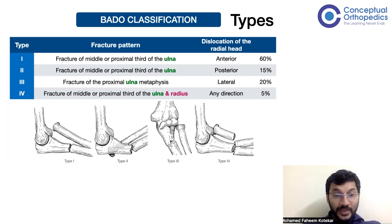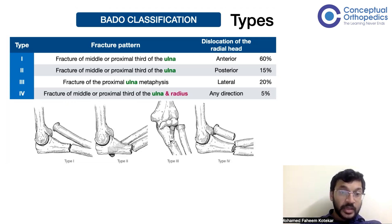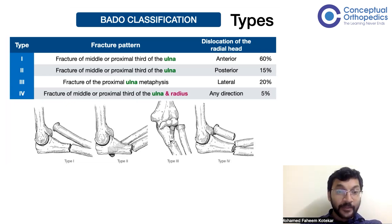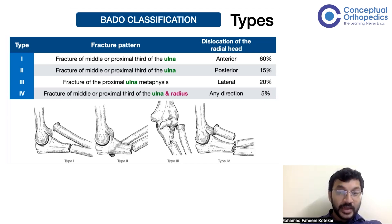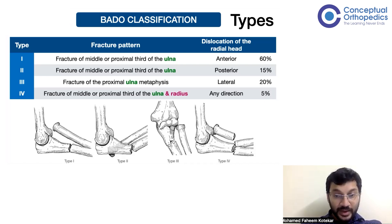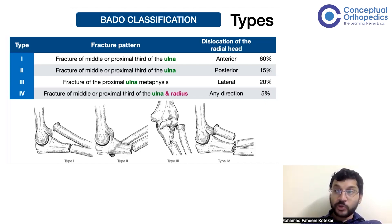When describing these fractures, both the location and the angulation of the ulnar fracture are important. In Type 1, there is anterior angulation with anterior dislocation of the radial head. In Type 2, there is posterior angulation with a posterior dislocation of the radial head.